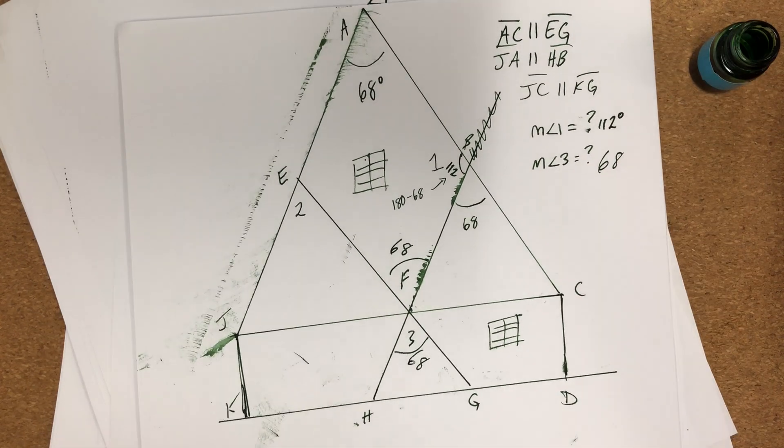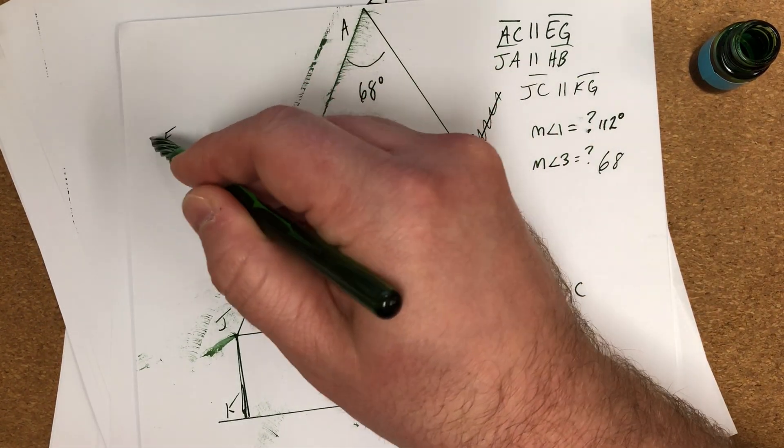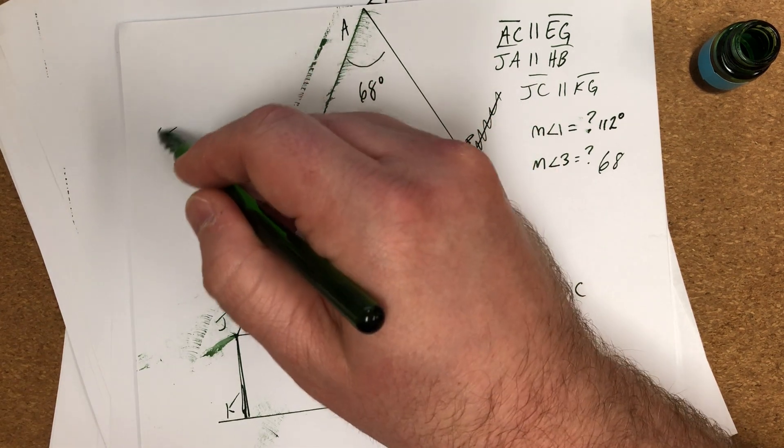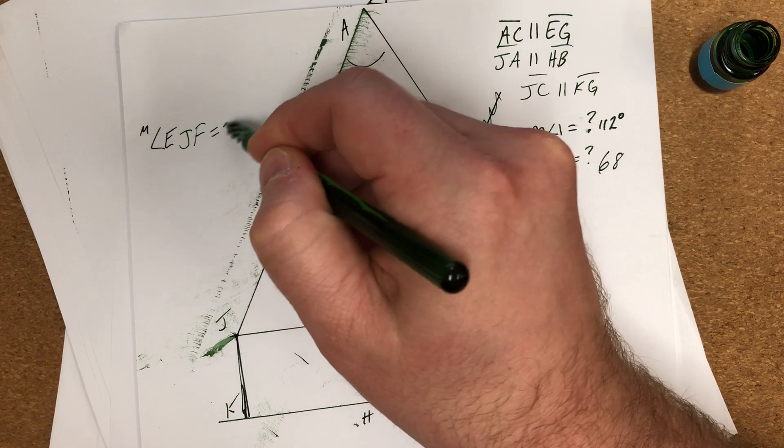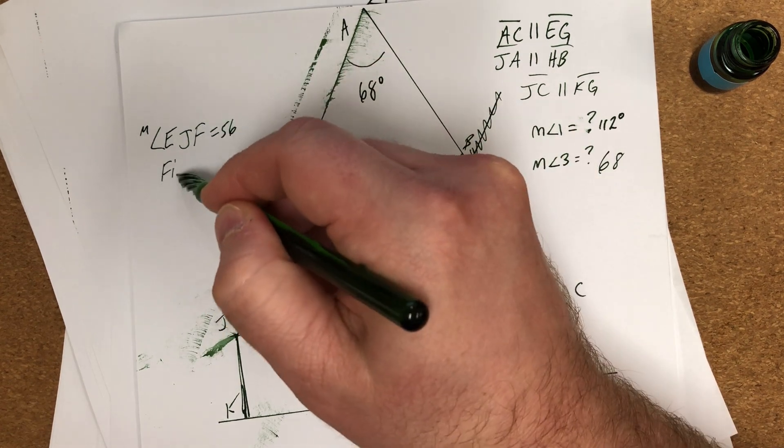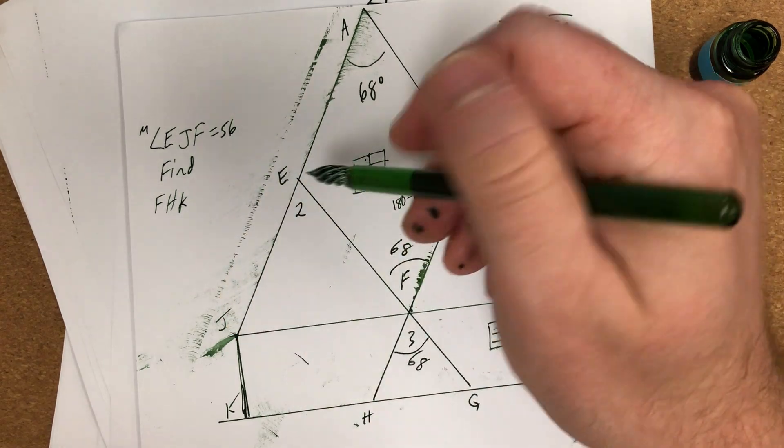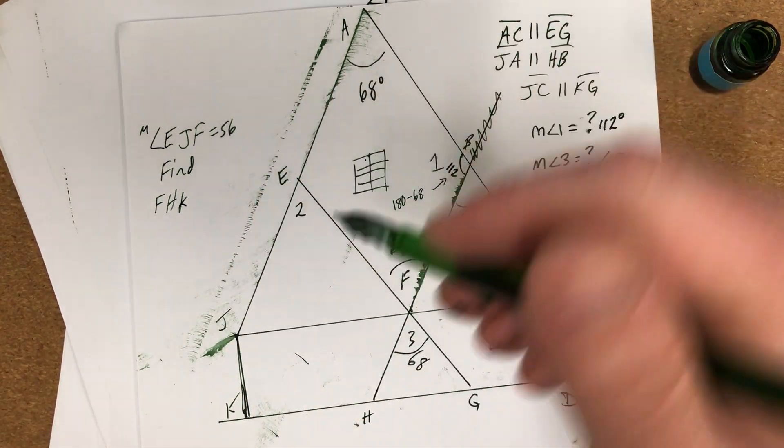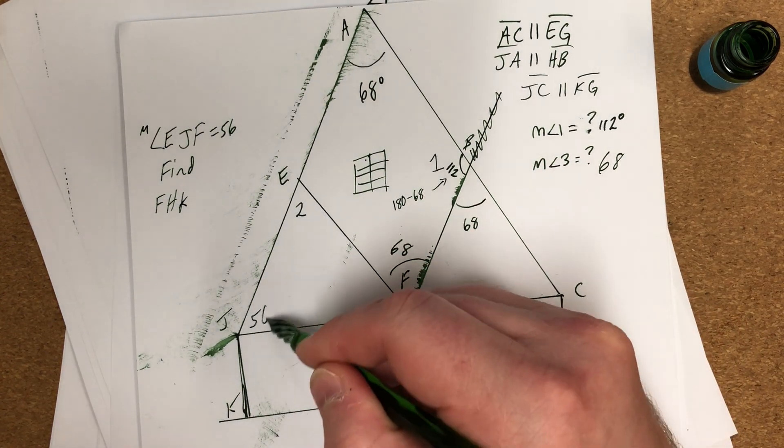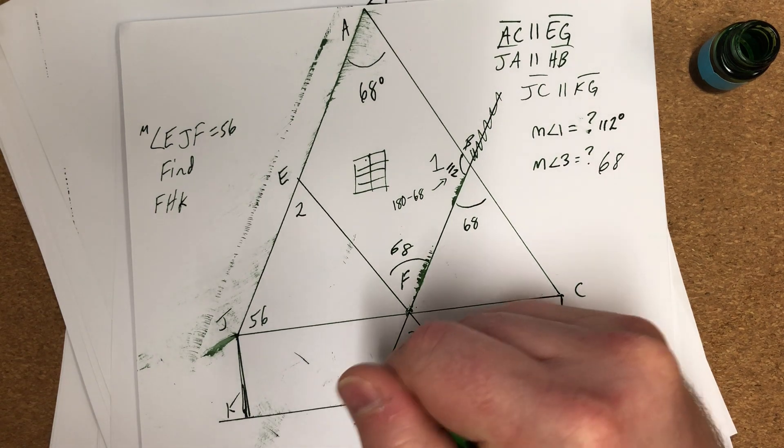All right, here's our next, there's one more little problem here. This is like part two of this. EJF is equal to 56, find FHK. All right, let's see, EJF, right, is E to J to F. I just connect those dots. This is 56. Find FHK, so I'm looking for this.